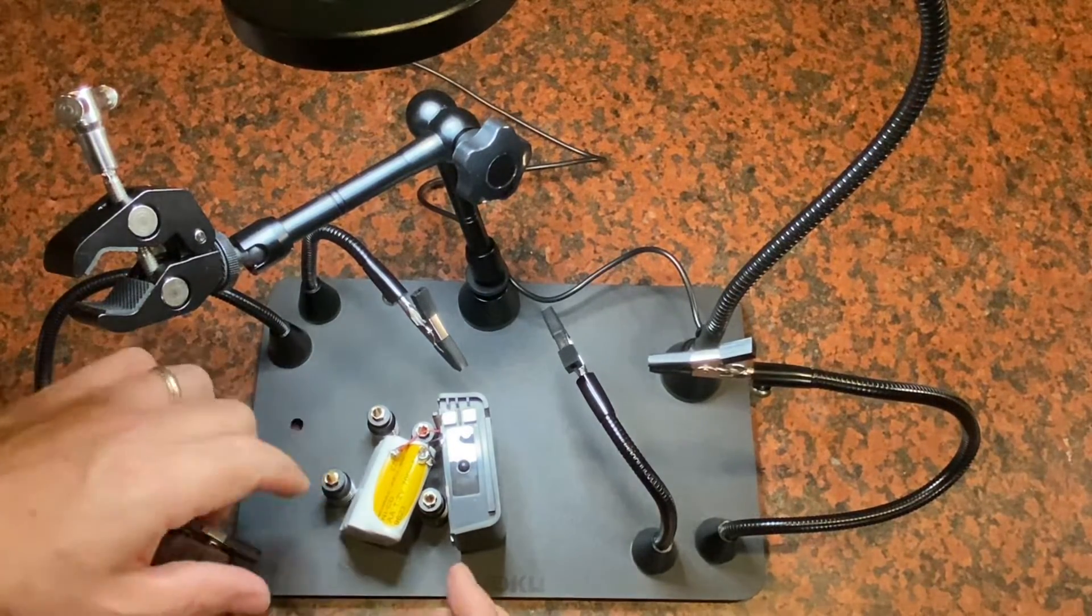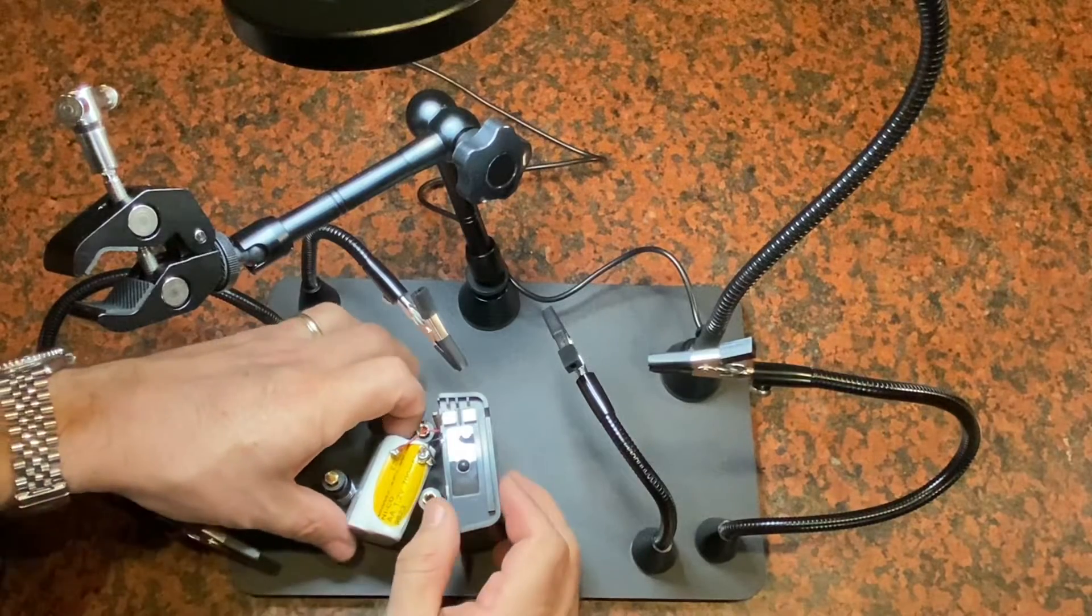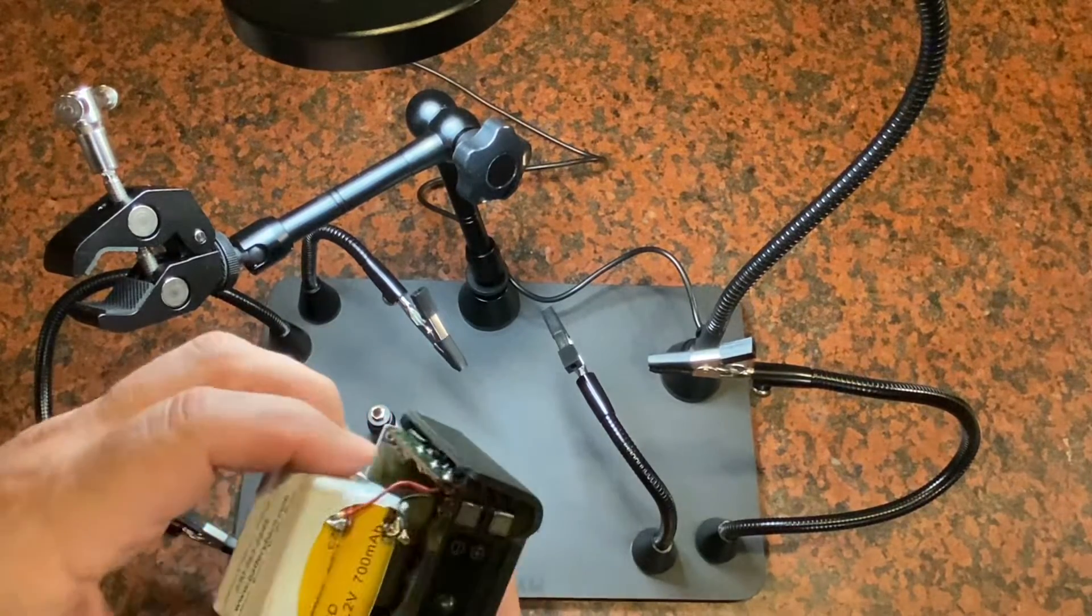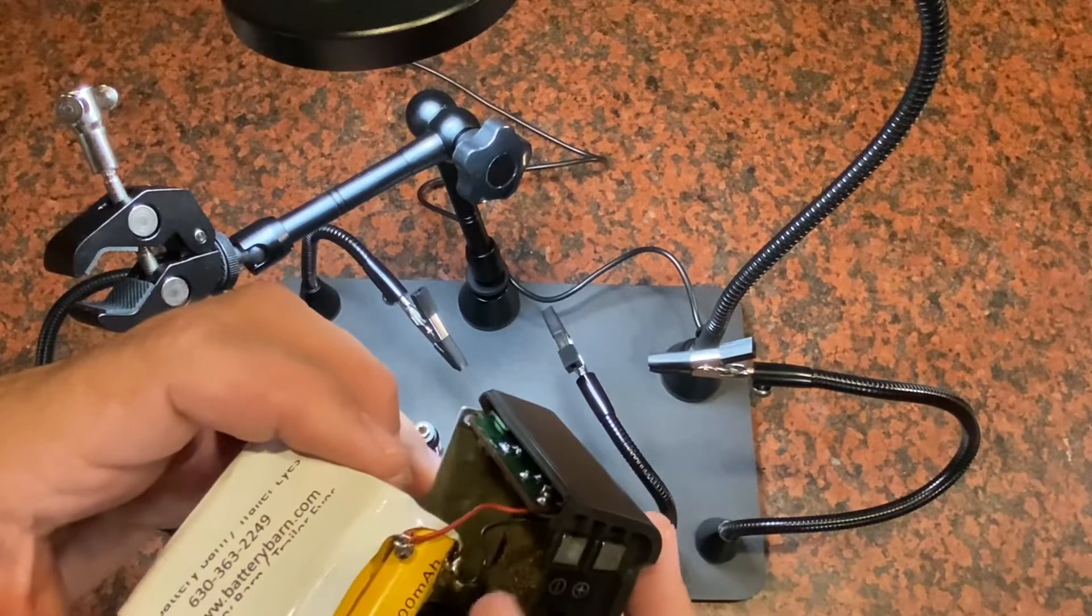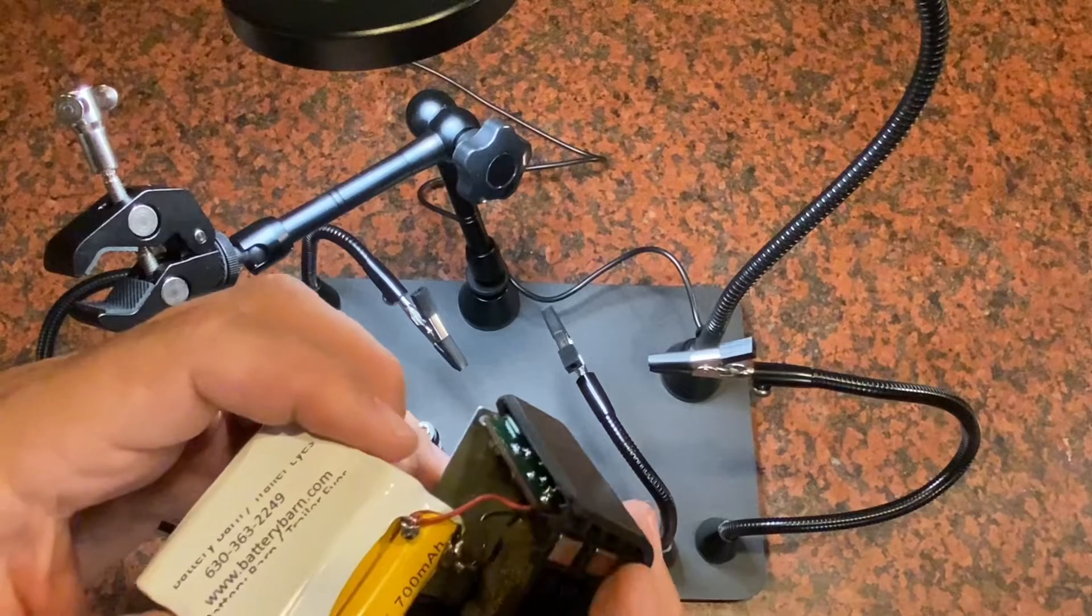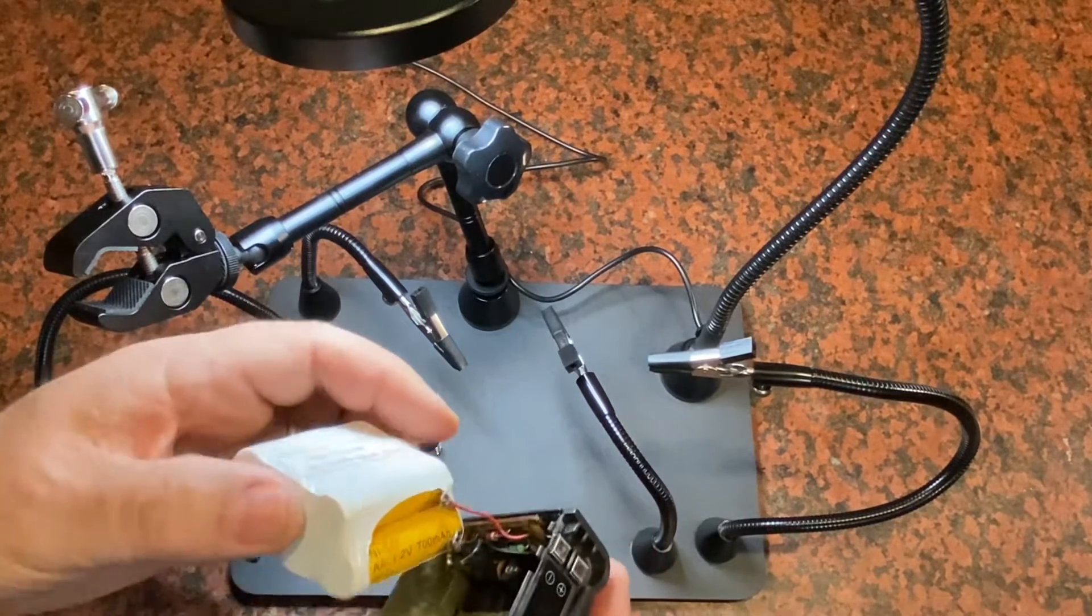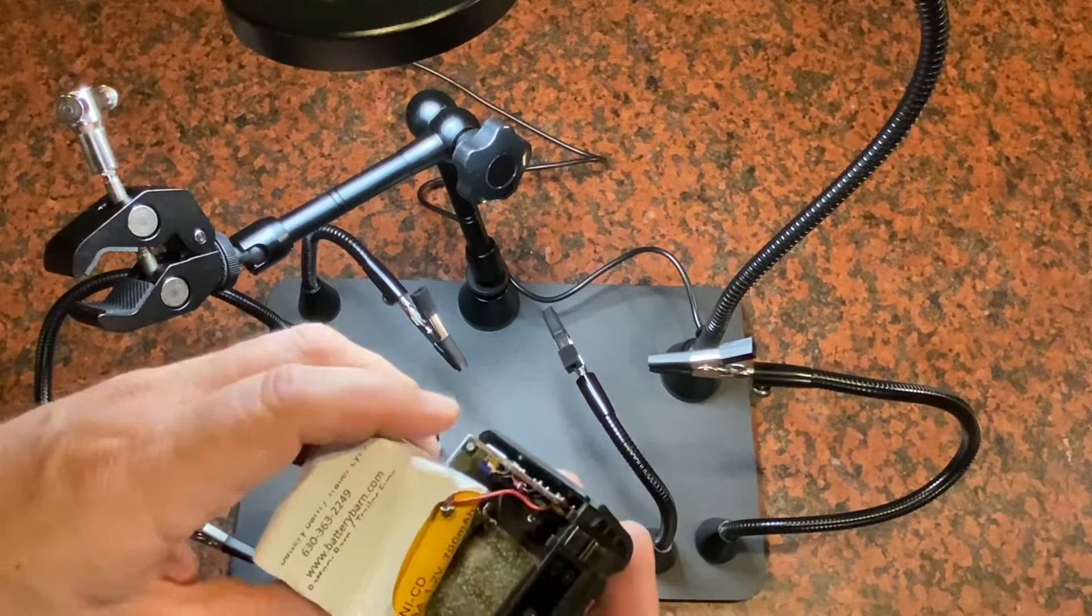All right, so I ended up soldering the red wire on also because that little clip they provided really didn't work for me. So I've got two good connections here with my ground and my positive. Let's get this bundled back up and check out see how the radio works.